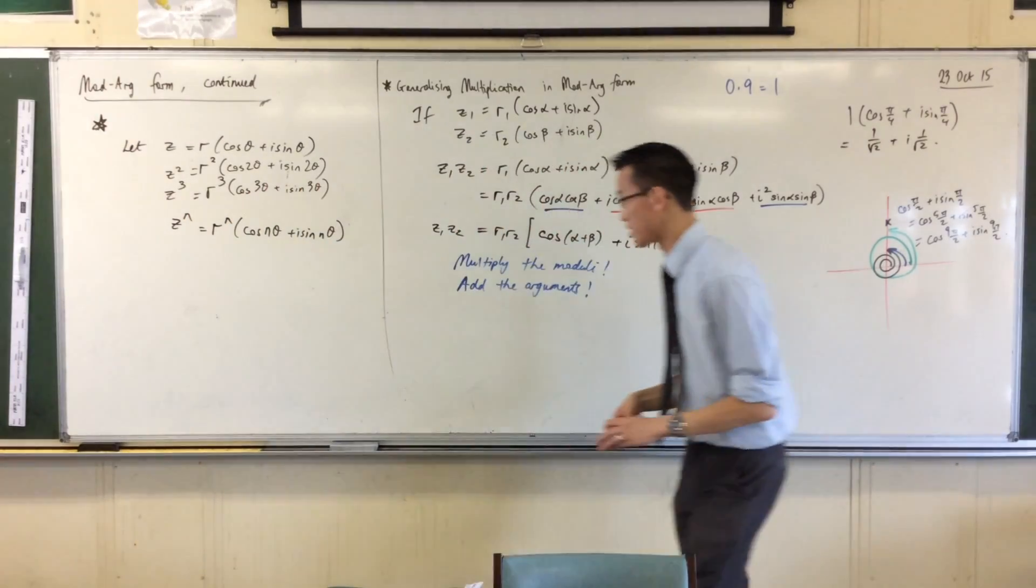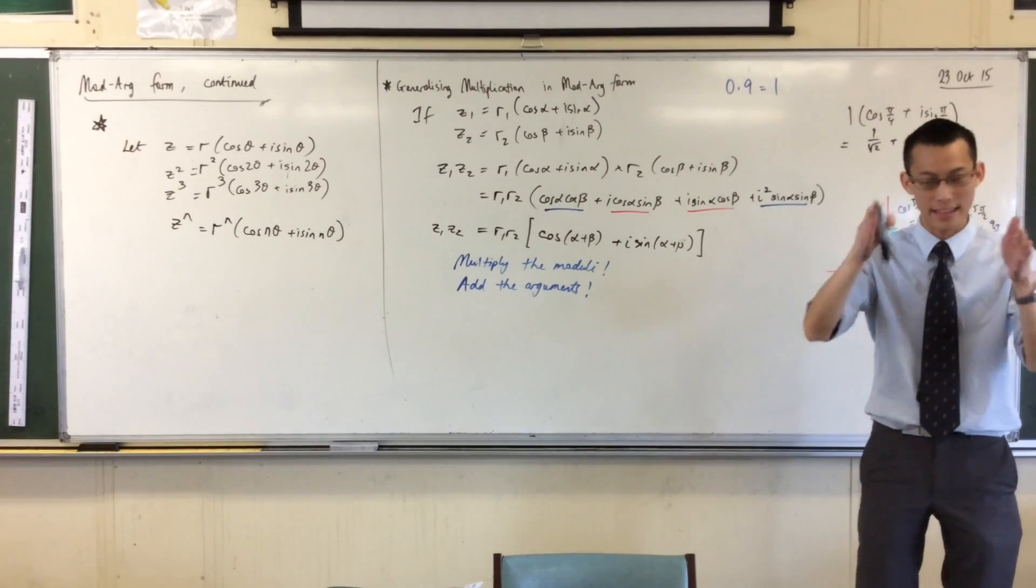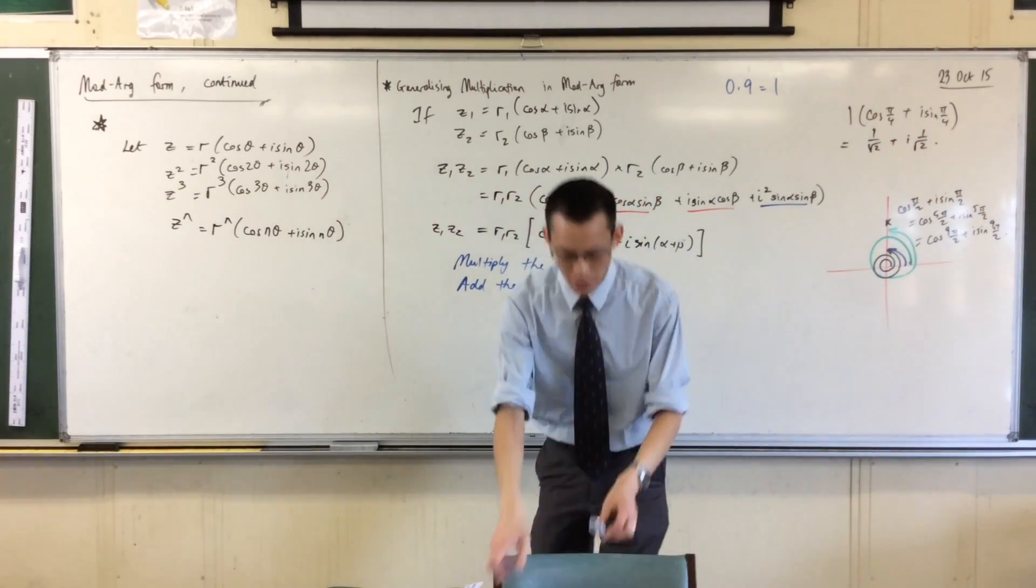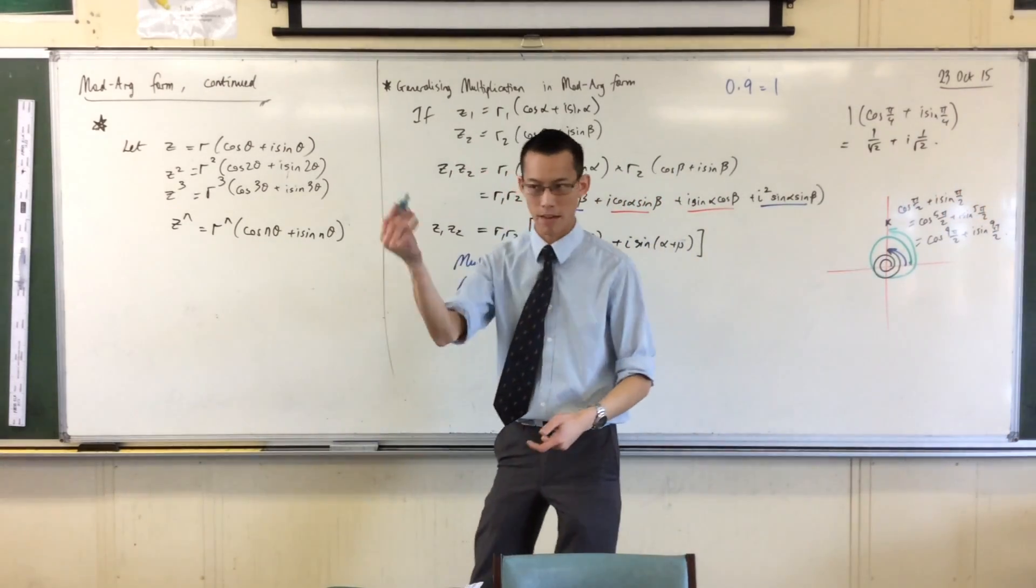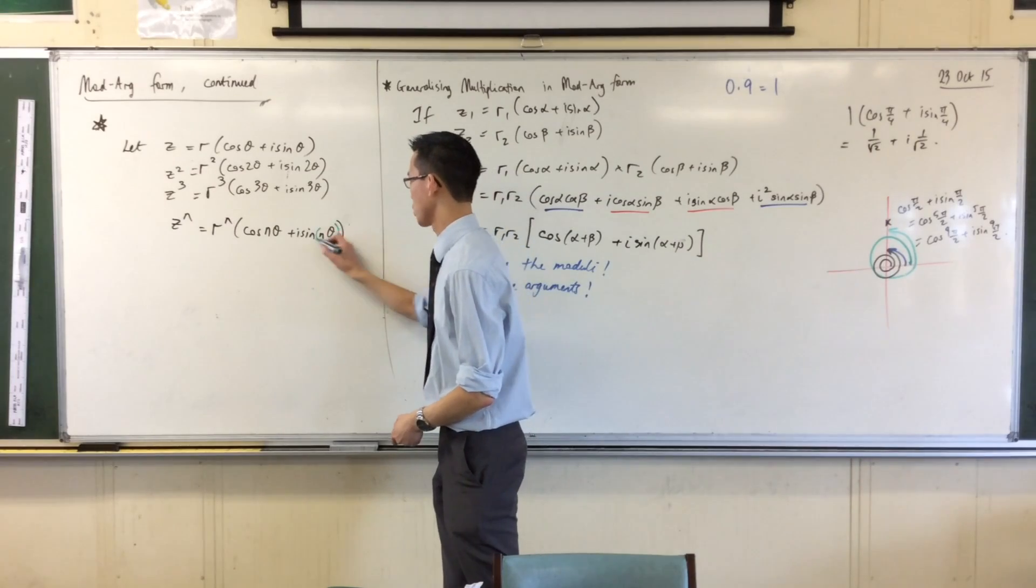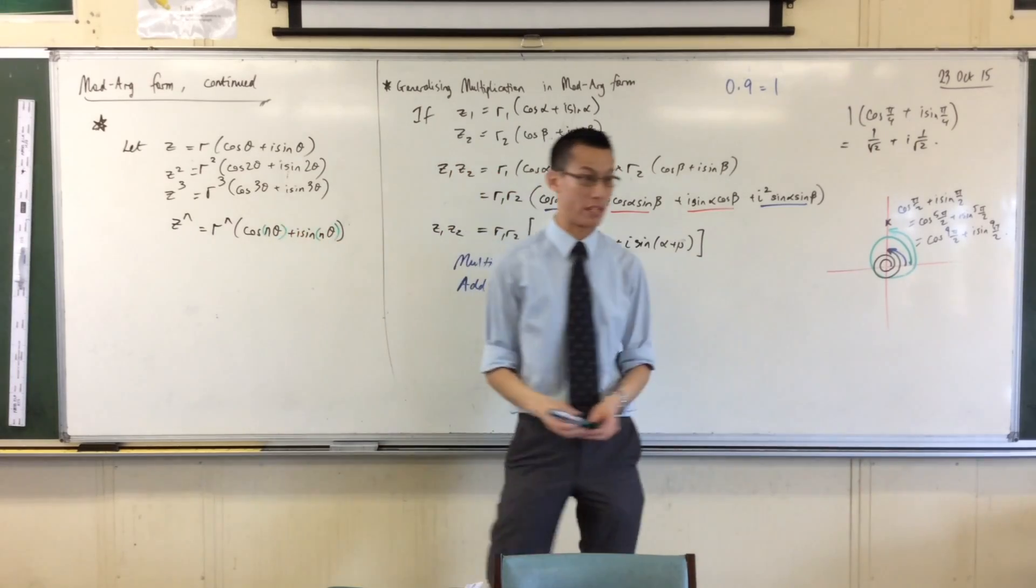Now don't read it as a double n. That's i sine nθ, and sometimes to make that really obvious, some mathematicians and authors will put brackets around there just to make it really obvious.